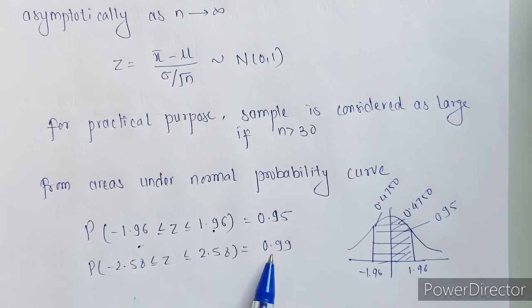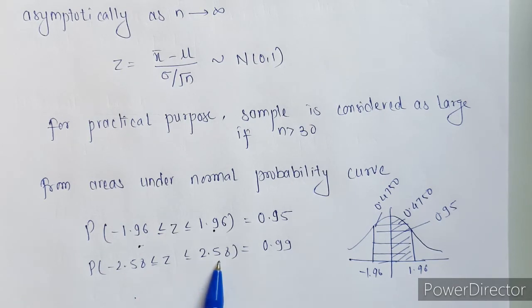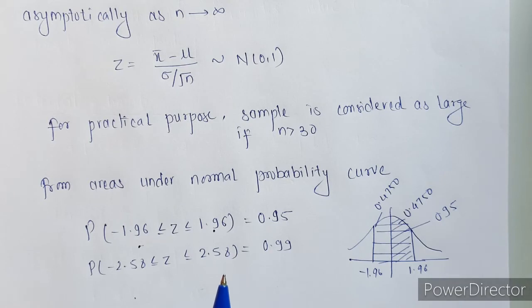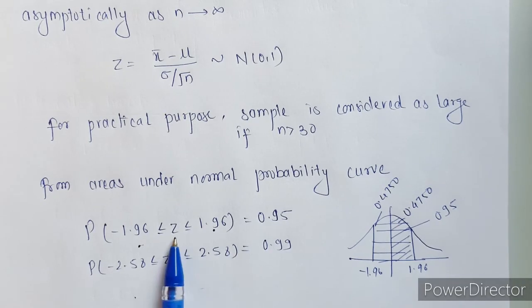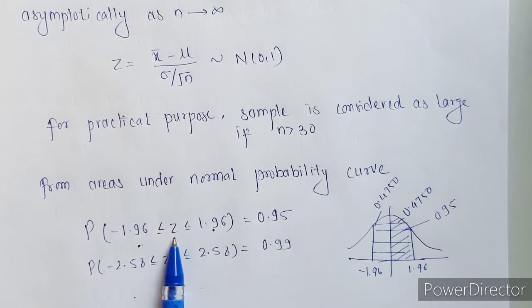Similarly, if we are looking for 99% confidence, the area between minus 2.58 and plus 2.58 will be 0.99. This interval is for the standard normal variable.